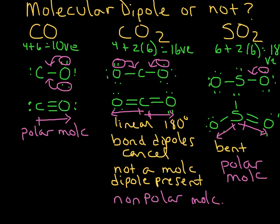Whenever you're looking at these types of problems and trying to figure out whether a molecule has an overall molecular dipole: if the molecule is symmetrical — like carbon dioxide, which is linear with an oxygen on each side — those dipoles are going to cancel out, because they're equal and opposite. For sulfur dioxide, both bond dipoles point generally downward toward the oxygens, and there's nothing to offset them in the other direction, leaving an overall molecular dipole. Similarly, for carbon monoxide, the molecular dipole points toward oxygen with nothing on the other side to offset it.